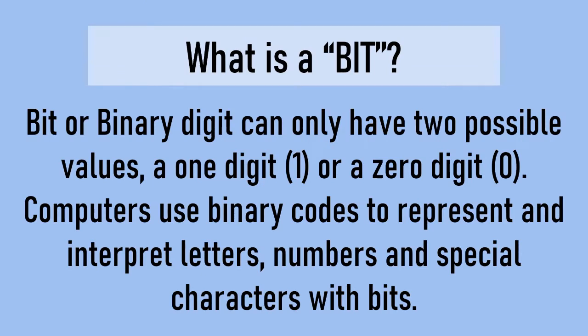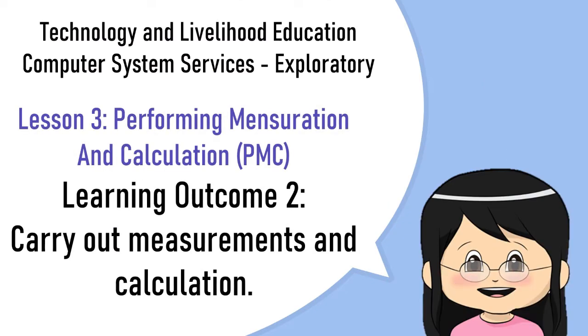Hello class! From our previous lesson, we learned about the bit, or binary digit. A bit can only have two possible values: a one or a zero. Computers use binary codes to represent and interpret letters, numbers, and special characters. With this foundation, we will learn more about binary numbers.